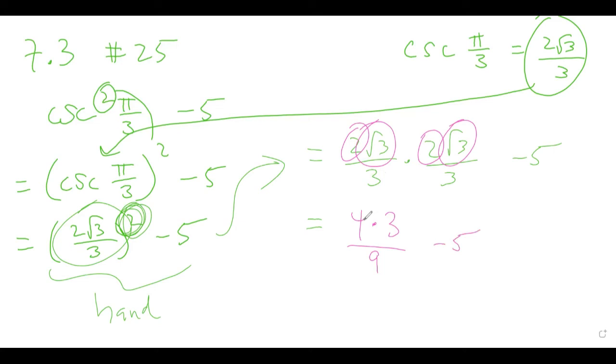Now this is going to be—how about this? Look, how about we cancel that 3, but it turns the 9 into a 3 in the bottom if we just reduce. And so what we have so far is 4 over 3 minus 5.